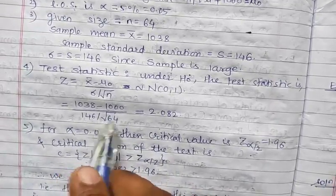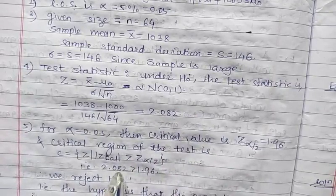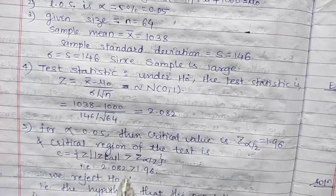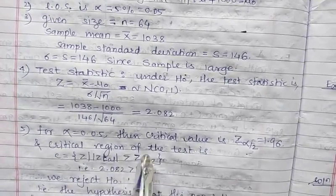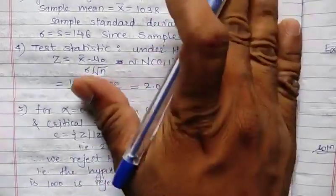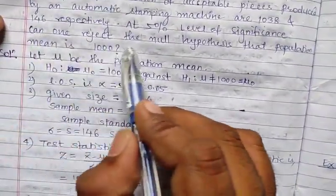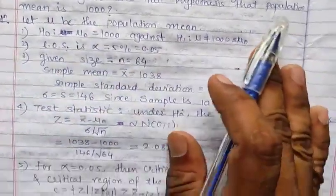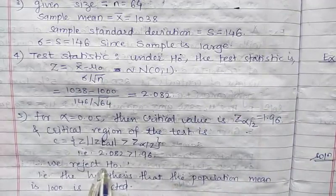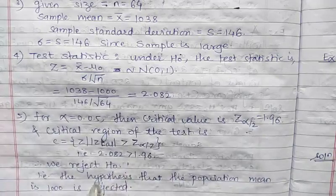Here the value of z_calc is 2.082. Taking its absolute value as is, we observe that 2.082 is greater than 1.96. Therefore, this condition is satisfied, and we reject H₀. Because in our standard procedure, if this condition is satisfied we reject H₀, otherwise we accept H₀. So we reject H₀, which means the hypothesis that the population mean is 1000 is rejected.